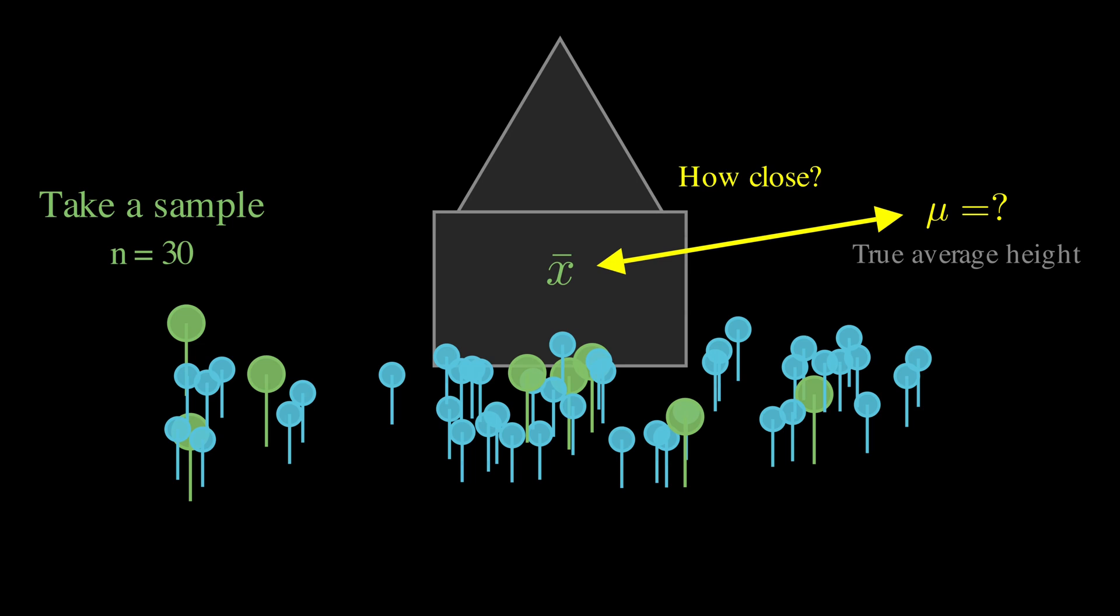In an ideal world, if you knew the true standard deviation of the entire population, which we call sigma, you could use the normal distribution to figure out how confident we should be about our sample mean. This works beautifully because of something called the central limit theorem, which tells us that sample means follow a normal distribution. But here is the catch.